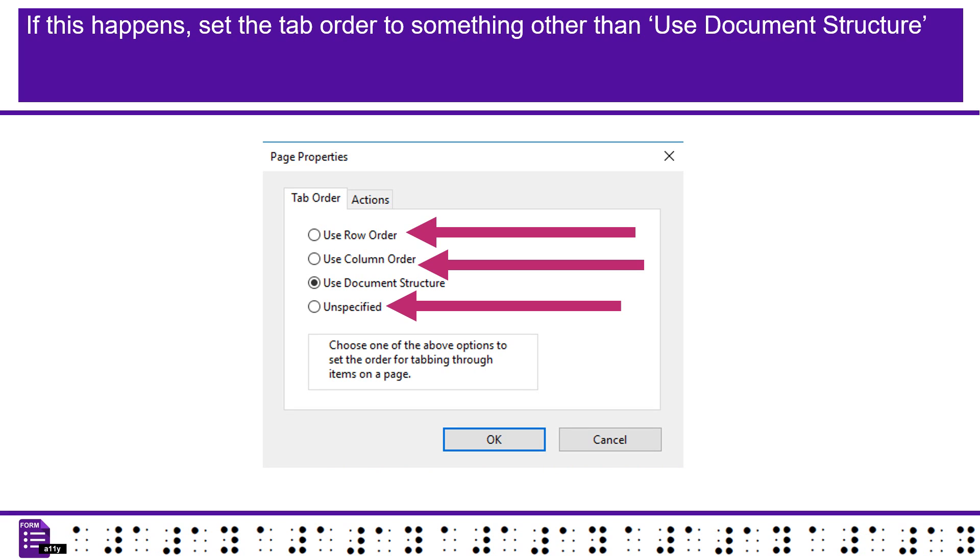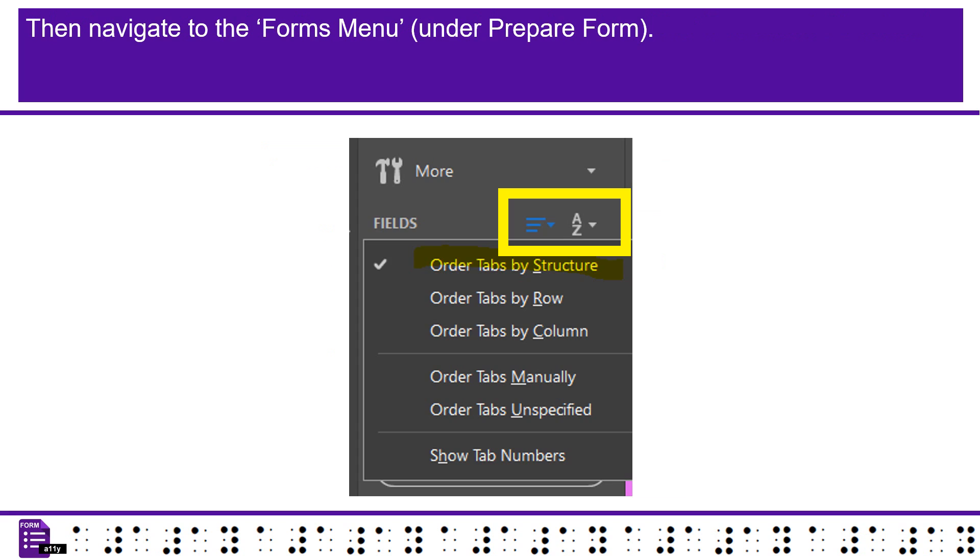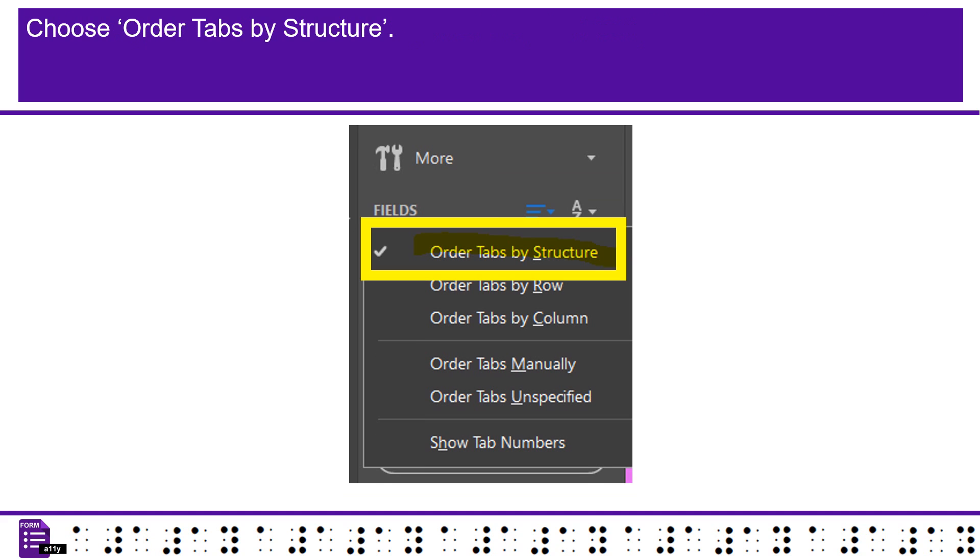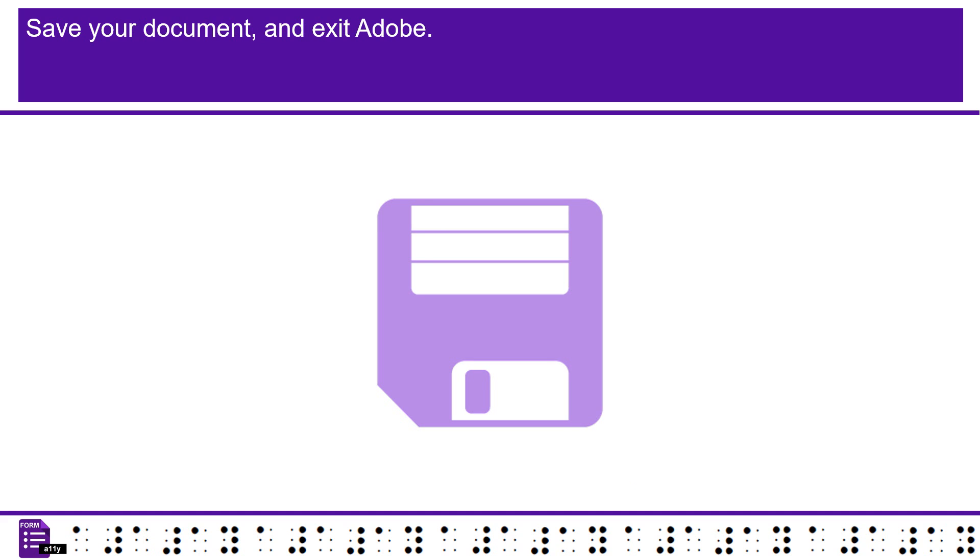If this happens, send the tab order to something other than Use Document Structure. Then navigate to the Forms menu under Prepare Form. Choose Order Tabs by Structure. Save your document, and exit Adobe.